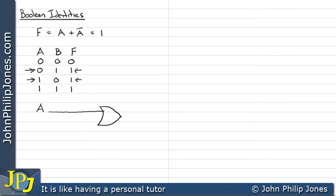Well it roughly looks like an OR gate and we have an output here and I want to produce at this point F equals A OR NOT A.